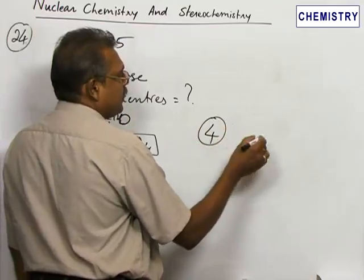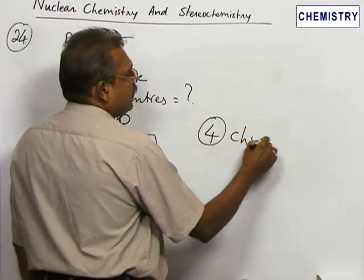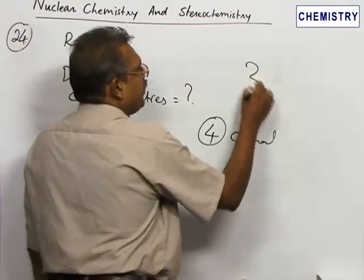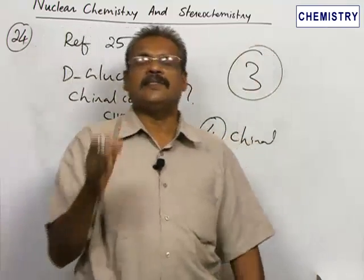we have four asymmetric centers or chiral carbons. This is given by option three, so select option three: four chiral centers.